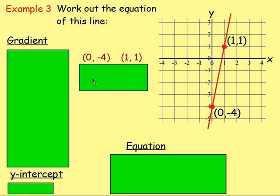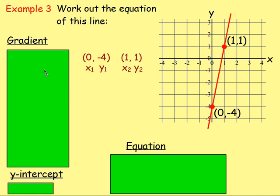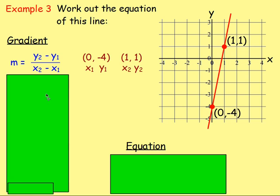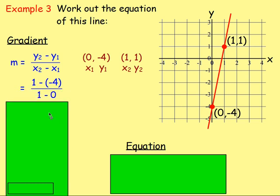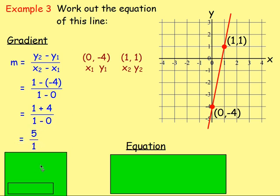Call one of them point 1 — x1 and y1 — and the other point 2 — x2 and y2. It's alphabetical. To work out the gradient we use the formula y2 take away y1 over x2 take away x1. Substituting: y2 take away y1 is 1 take away negative 4, and x2 take away x1 is 1 take away 0. 1 take away negative 4 becomes 1 add 4, giving 5 over 1. 5 divided by 1 is just 5. So the gradient is 5.